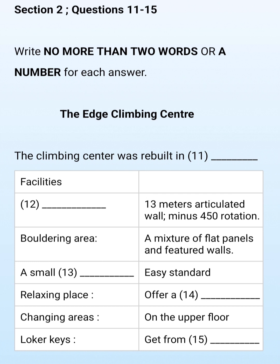With over 150 routes, the main hall packs in a huge variety of climbs on featured and flat panels. Our facilities are continuously developing and feature a 13-meter articulated wall that can rotate to minus 45 degrees. Easier routes can be top roped; other routes have quick draws in place for the lead climber. We think we have every angle covered.